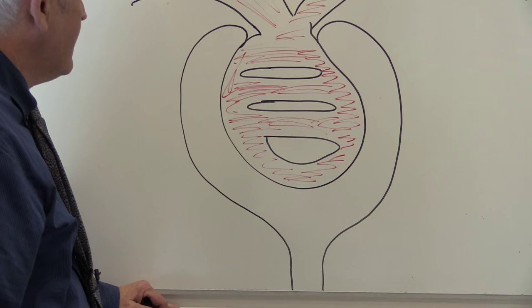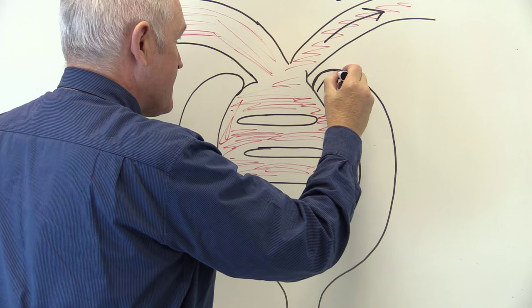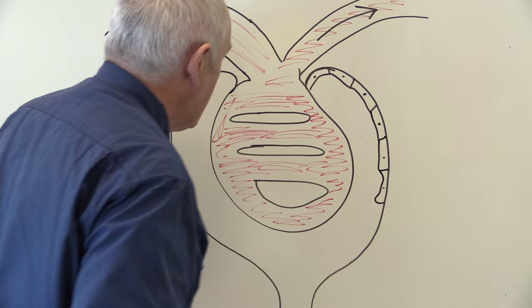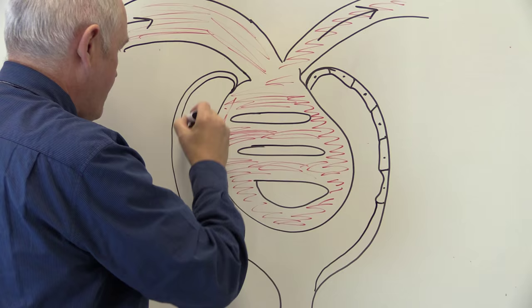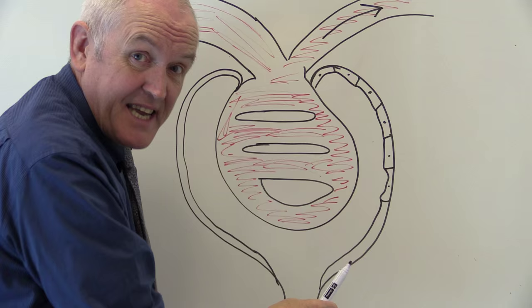This whole thing is the renal corpuscle. This is the parietal capsule — it's made up of individual squamous cells. This capsule we call Bowman's capsule — that's the parietal layer. And the space between the capillaries and Bowman's capsule is Bowman's space, or the capsular space.